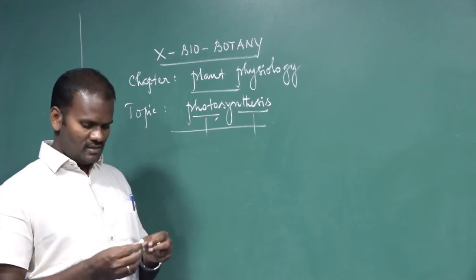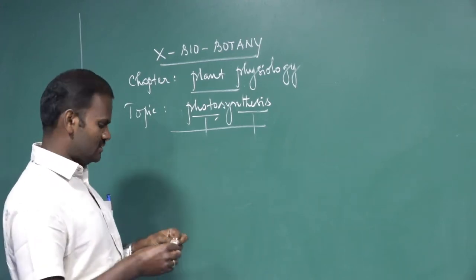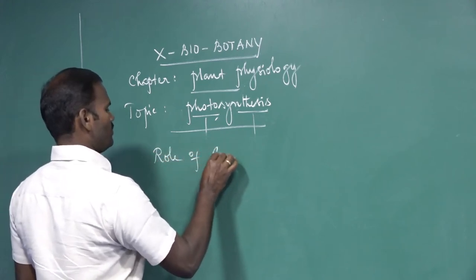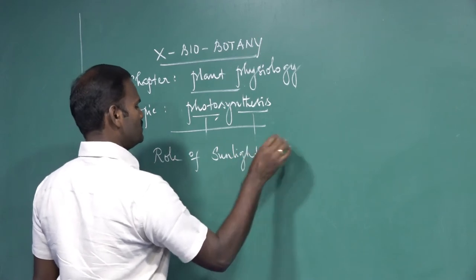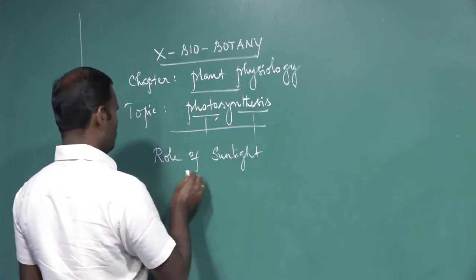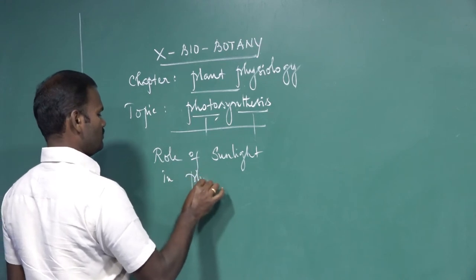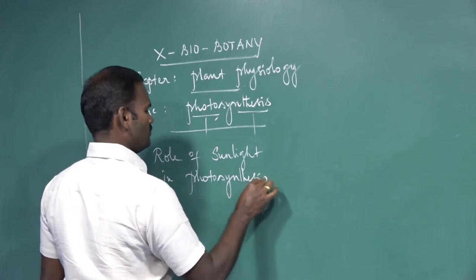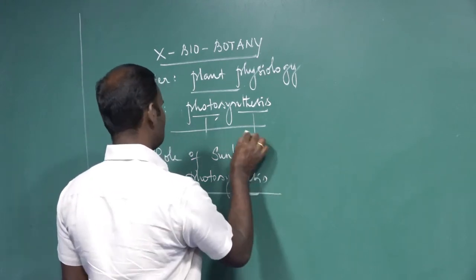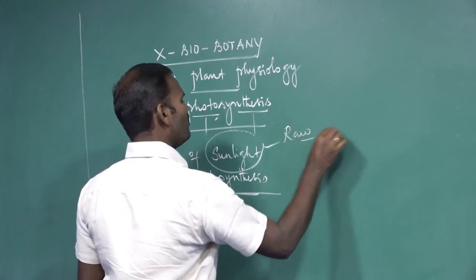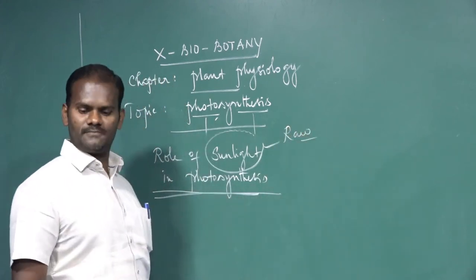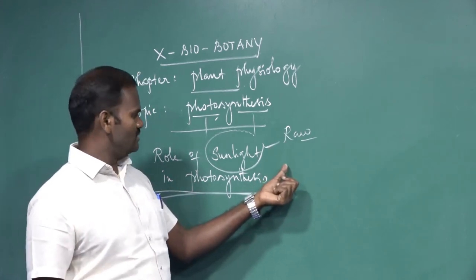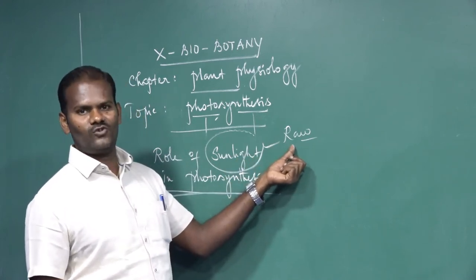The next topic is the role of sunlight in photosynthesis. We know that sunlight is one of the raw materials needed for photosynthesis, along with carbon dioxide, water molecules, and chlorophyll pigment. What is the role of sunlight during photosynthesis?